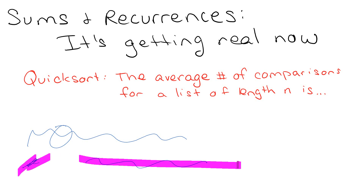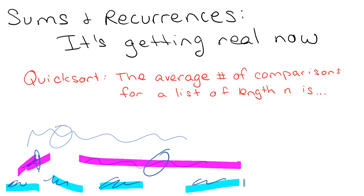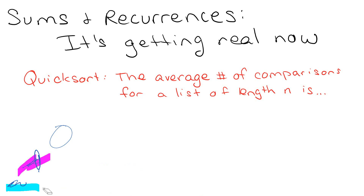So you apply quicksort on the left sublist and quicksort on the right sublist. You pick a random pivot, partition into left and right, and now you have four things that all have to be sorted with quicksort. It probably comes as no shock that the number of comparisons for a list of some length in quicksort is given by a recursive definition.